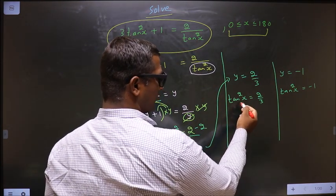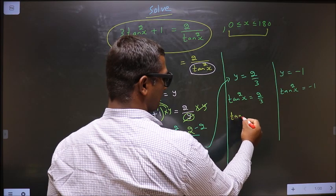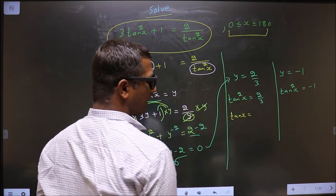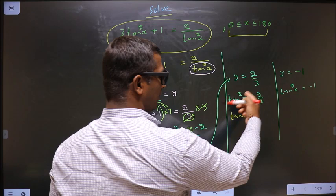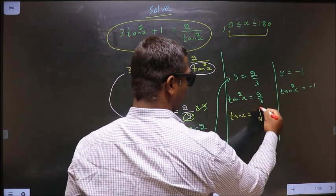Now here you should get tan x. That could happen if you shift square to the other side. So when you shift square to the other side it will become square root.